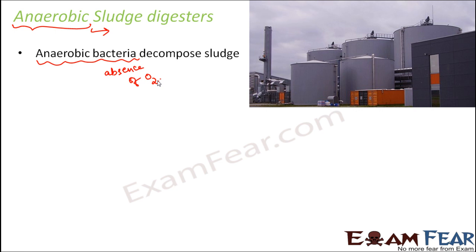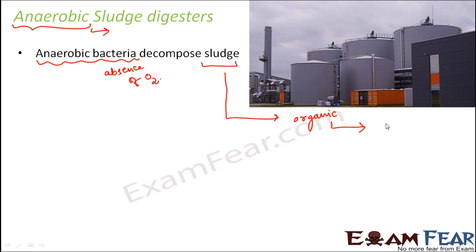Construction-wise, these digesters are closed circular tanks. They are huge and closed. Why are they closed? Because these are anaerobic — they do not want oxygen to enter. Inside, the anaerobic microorganisms break down the organic matter, because sludge is also organic content. During the process of breaking down, several gases are emitted. Some of the prominent gases are methane, carbon dioxide, and also small amounts of hydrogen, nitrogen, and hydrogen sulfide. These are the major gases produced by the action of anaerobic bacteria.